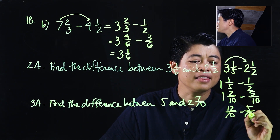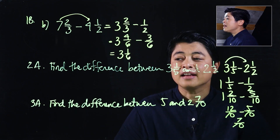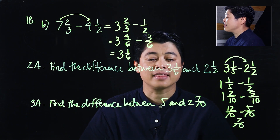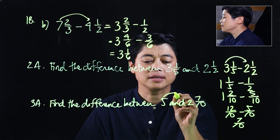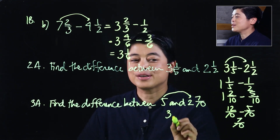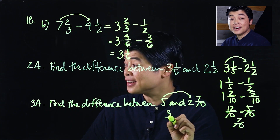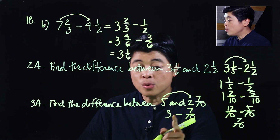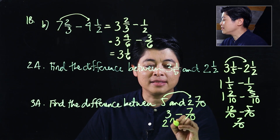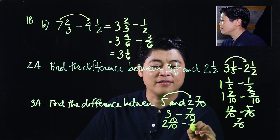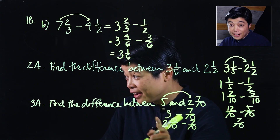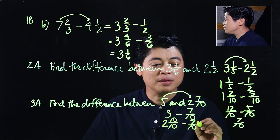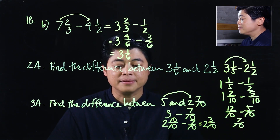For the next problem, find the difference between 5 and 2 and 7 tenths. We subtract: 5 minus 2 is 3, then minus 7 tenths. Since we can't subtract 7 tenths directly, we borrow 1 whole, writing it as 2 and 10 over 10 minus 7 over 10. Borrowing 1 whole written as 10 over 10 gives us an answer of 2 and 3 over 10.